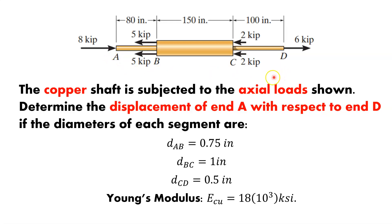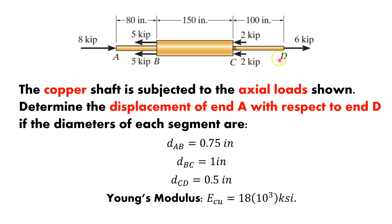Unlike most of the others where we had to find a support reaction first, this gets us to this particular point. They're asking us for the displacement of A with respect to D — how much does A move compared to D, and in which direction?